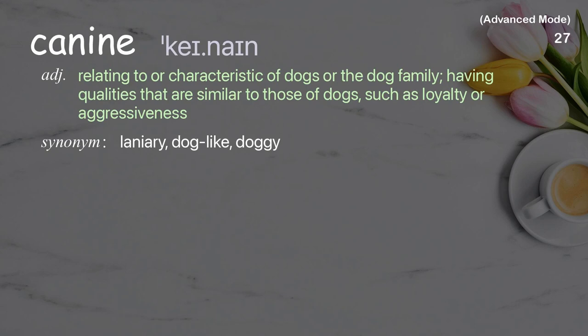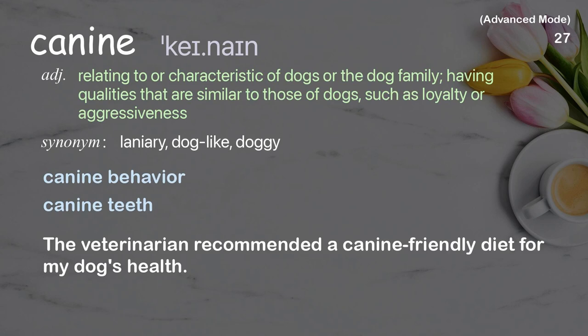Canine: relating to or characteristic of dogs or the dog family; having qualities similar to those of dogs, such as loyalty or aggressiveness. Examples: canine behavior; canine teeth. Example sentence: The veterinarian recommended a canine-friendly diet for my dog's health.